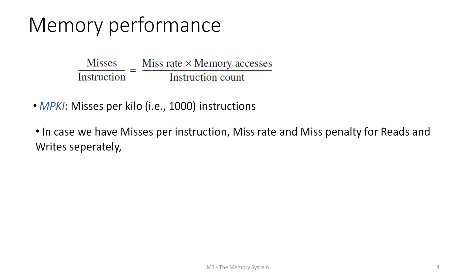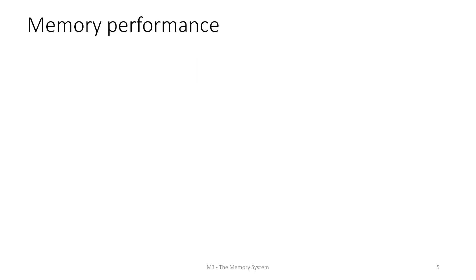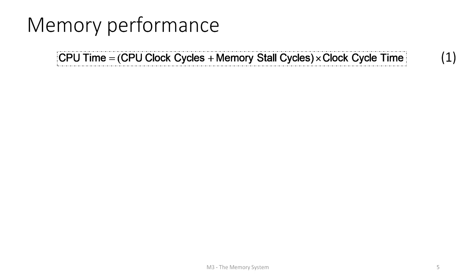If we have misses per instruction data for reads and writes separately, along with miss rate and miss penalty for reads and writes separately, then the memory stall cycles expand as: total instruction count times reads per instruction times miss rate for reads times miss penalty for reads, plus the same terms for writes.